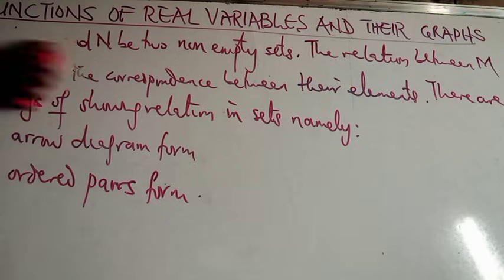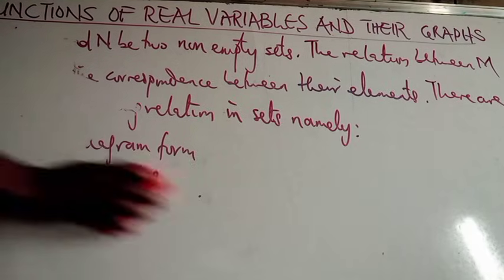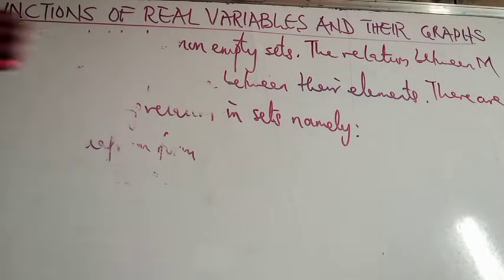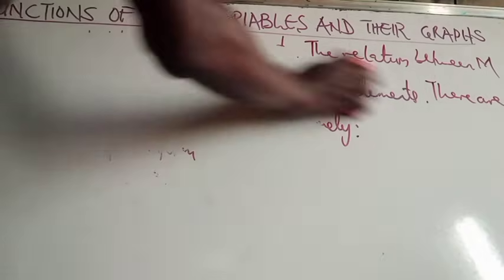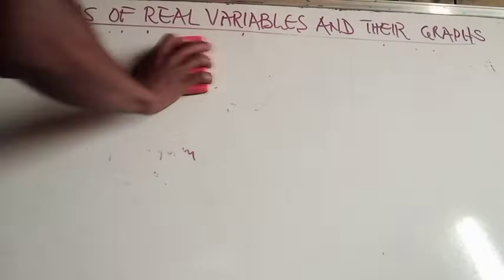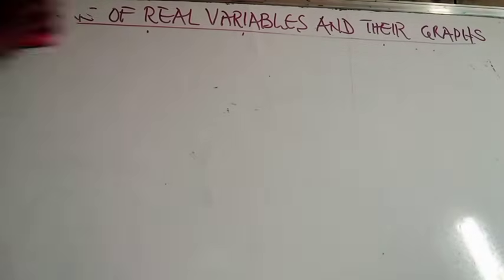Now, let us illustrate this with examples. We can clean this. Let's clean this too, so we also have enough space. Now, the first one, we shall use an arrow diagram form to illustrate relations in sets M and N.